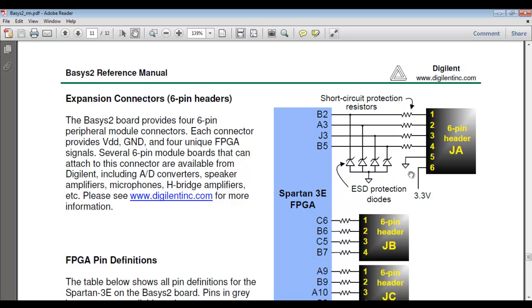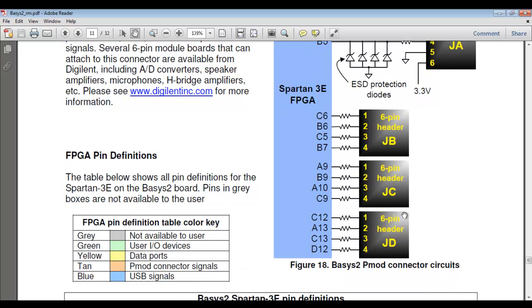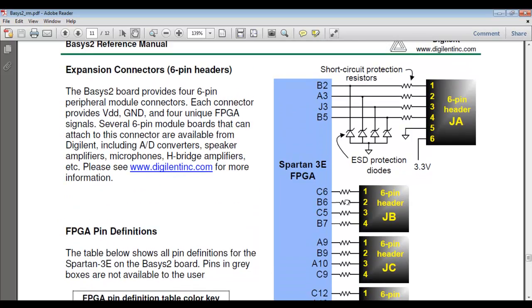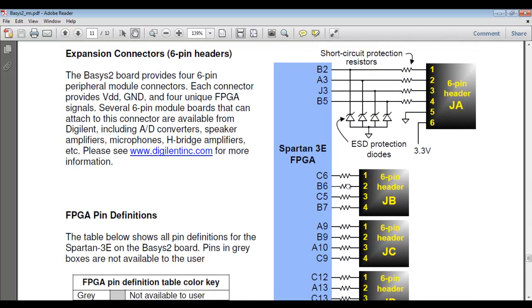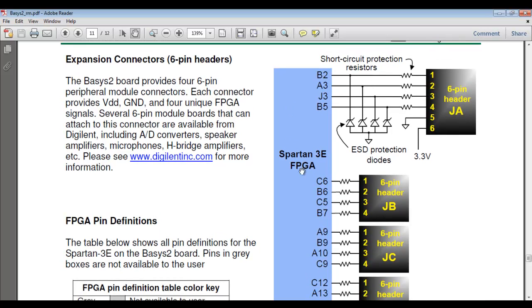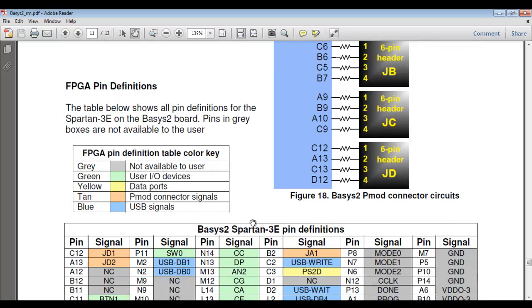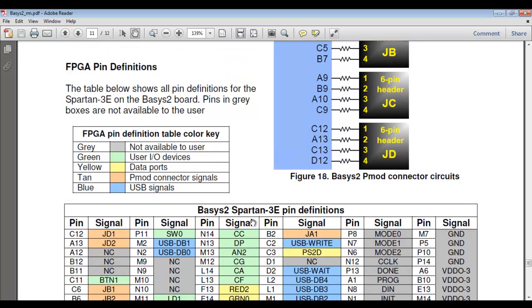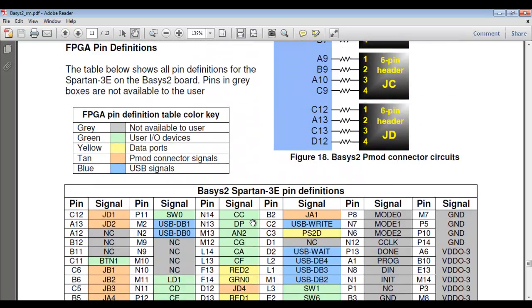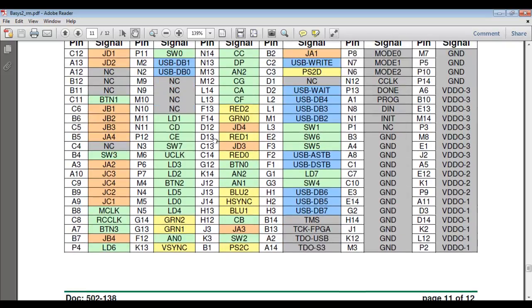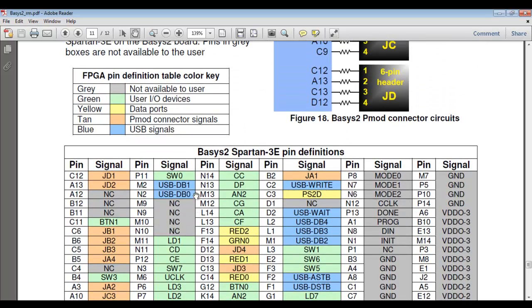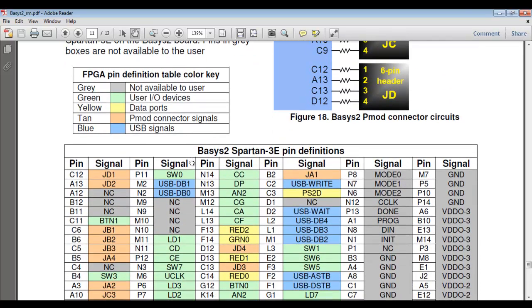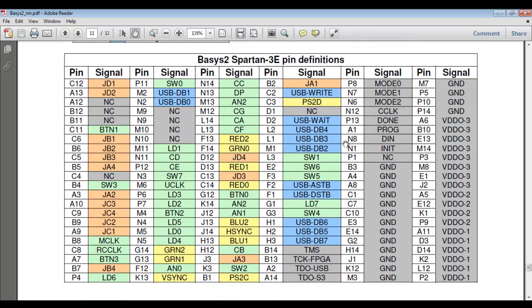reverse diodes and series resistors. Other IOs also have series resistors to protect the IOs of this Spartan FPGA. The description of the whole FPGA uses different colors: gray indicates pins not available to the user because they